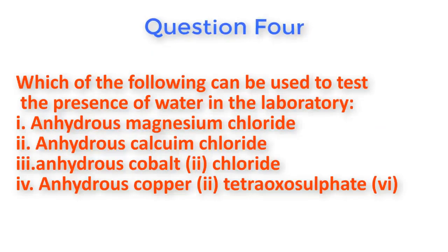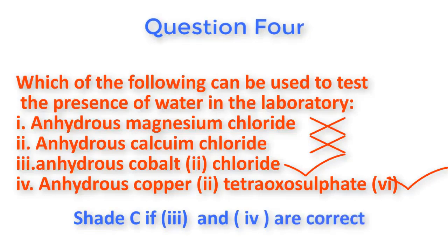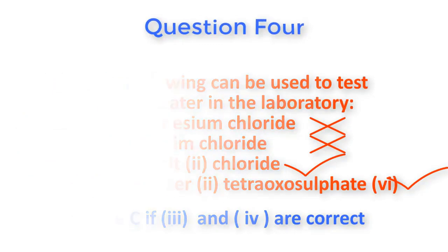Question number four: Which of the following can be used to test for the presence of water in the laboratory? The two chemical compounds that can be used to test for water are anhydrous copper chloride and anhydrous copper(II) tetraoxosulfate(VI). So options three and four are correct, and the right answer is C.